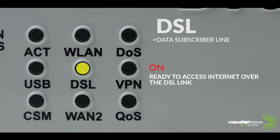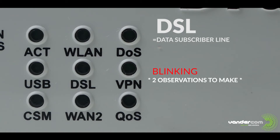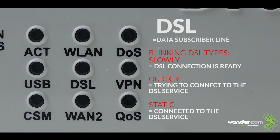If this light is blinking, there are two observations to make. Blinking slowly means the DSL connection is ready. Blinking quickly means it is trying to connect to the DSL service. If the light is static, the service is connected to the DSL service.